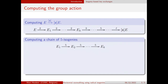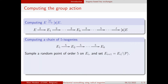So how do you do that? For example, how do you compute a chain of five isogenies? One way is to sample on each of the curves in your sequence a point of order 5, and then set the next curve to be the quotient by this point. That works, but it's not ideal because generating this random point can fail with a certain probability, and then you have to try again. This is not great for constant time implementations, and as mentioned, it's quite slow.